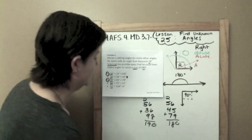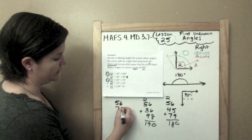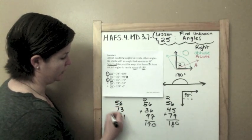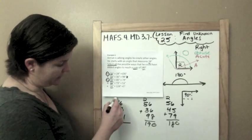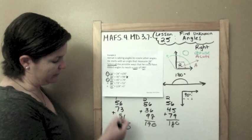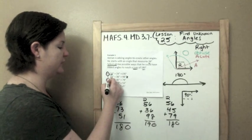56, 73, 51. We're looking at D right now. 6 plus 3 is 9. Plus 1 is 10. 5 plus 5 is 10. Plus 8 is 180. So yes, D.